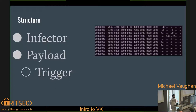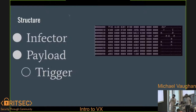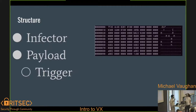If you want to write your own virus, we're going to do that today. It's basically three parts: your infector, your payload, and an optional trigger for that. You really only need the first one — the infector — that's what makes it a virus. If it spreads on its own, it's a virus.